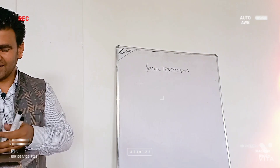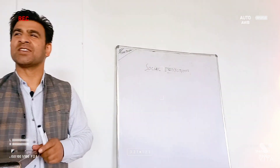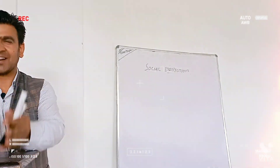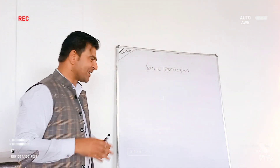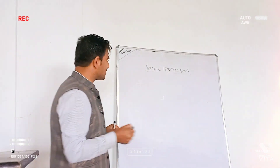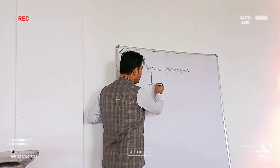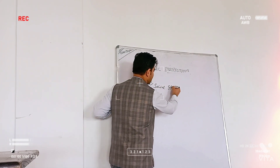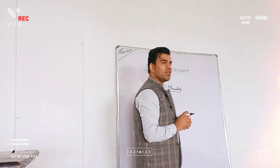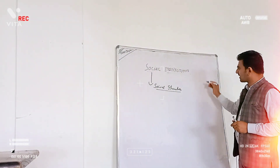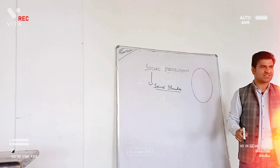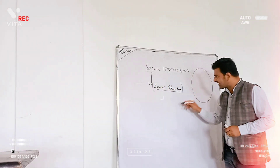We have just taken up the topic of social institutions. Yesterday we talked about social institutions and came to the conclusion that a social institution is basically a sort of social structure. When we talk in terms of social structure, we said that society is made up of different parts, and those parts are entitled as social structure.